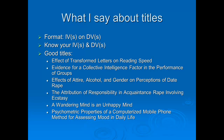Let me give you some examples of good titles. 'Effects of transformed letters on reading speed' — so we know the IV is transformed letters and the DV is reading speed. 'Evidence for a collective intelligence factor in the performance of groups' — even though we have some useless words like 'evidence for,' we can still figure out the IV is collective intelligence factor and the DV is performance in groups. 'Effects of attire, alcohol, and gender on perceptions of date rape' — again, now we know the IVs and the DVs.